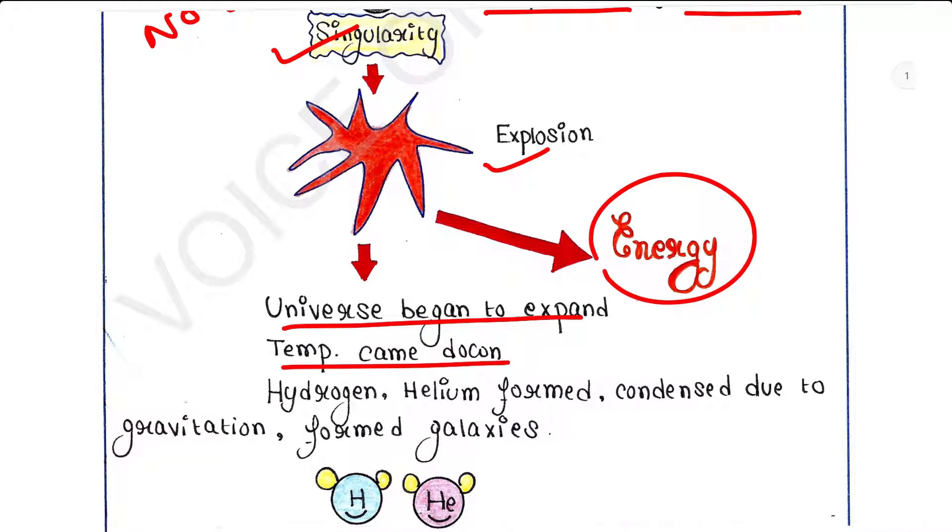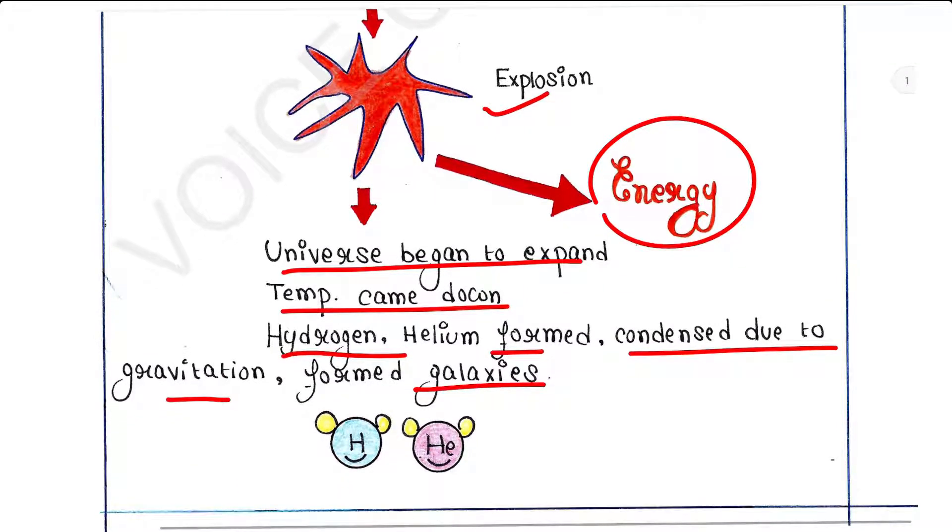Hydrogen and helium formed and condensed themselves due to gravitation and formed the galaxies. Galaxy is a huge collection of stars, dust, gases, and other particles. Galaxies are held together by gravity.